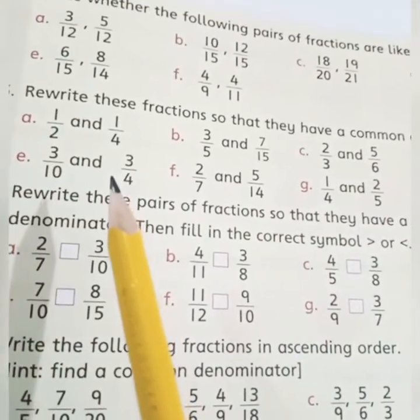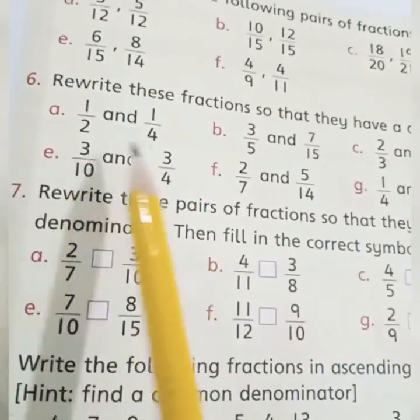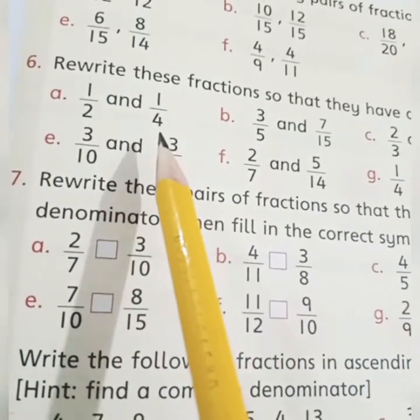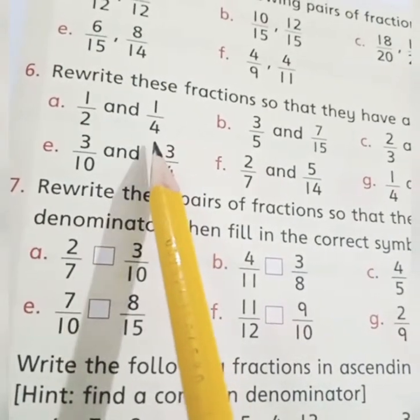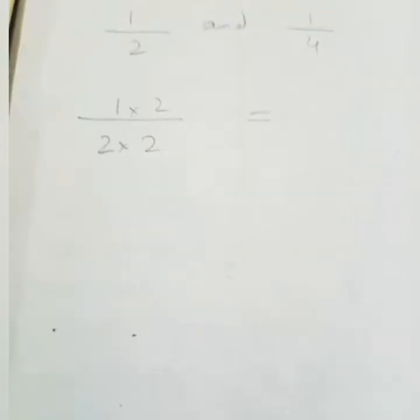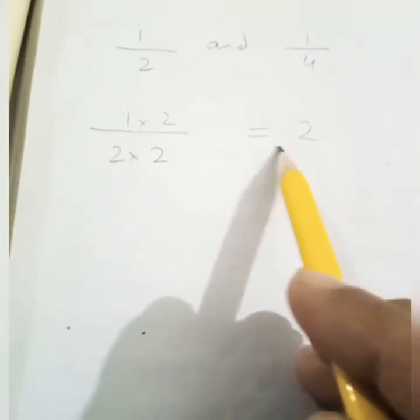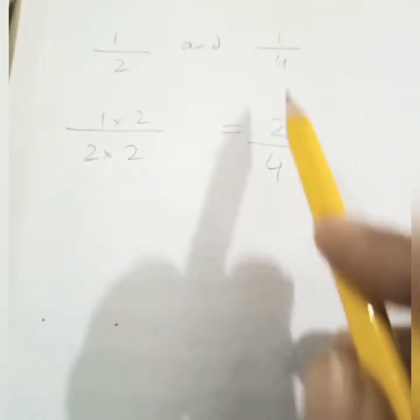Part a: one upon two and one upon four. The denominators are different — one is two and one is four. Which is the largest denominator? Four. Can we make two into four? Yes, by multiplying by two. So we multiply: one times two is two, upon two times two is four. Now we have two upon four and one upon four.